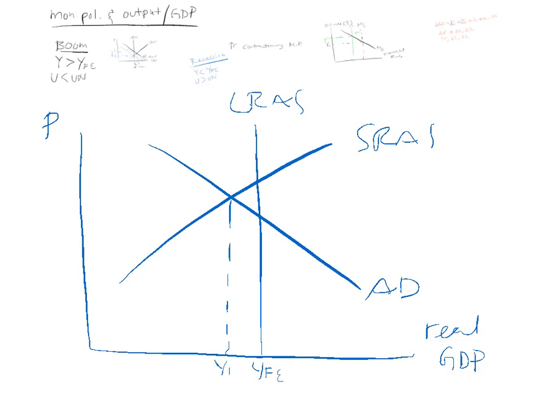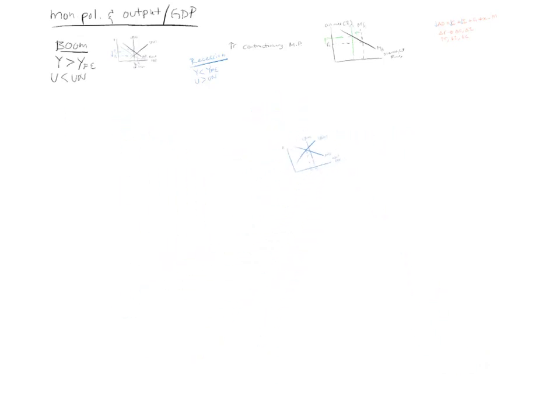So the economy has a recessionary gap equal to this area over here. A recessionary gap. Okay. So what we want to do is we want to get to our long run equilibrium. So what can we do using monetary policy? Well, what we can do using monetary policy is to run what we call expansionary monetary policy. We want to increase the amount of money in the economy.